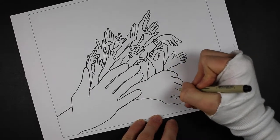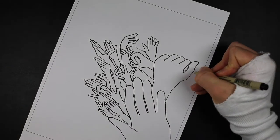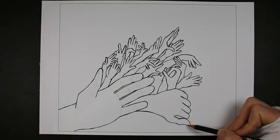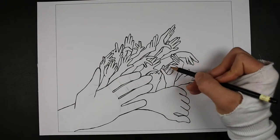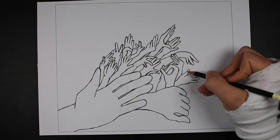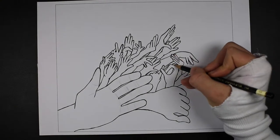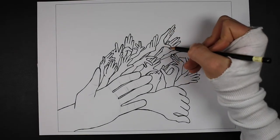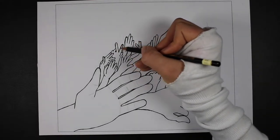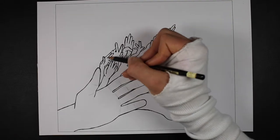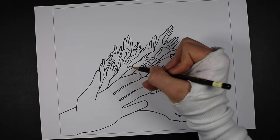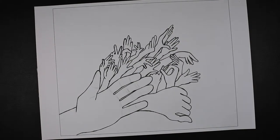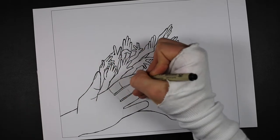'What are they about?' thought the tree. 'What is to happen now?' And the lights burned down to the very branches, and as they burned down they were put out one after the other. And then the children had permission to plunder the tree. So they fell upon it with such violence that all its branches cracked. If it had not been fixed firmly in the ground, it would certainly have tumbled down. The children danced about with their beautiful playthings. No one looked at the tree except the old nurse, who peeped between the branches, but it was only to see if there was a fig or an apple left that had been forgotten.